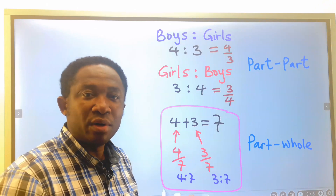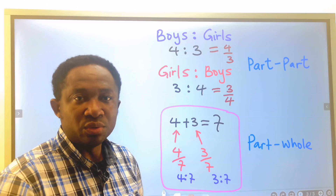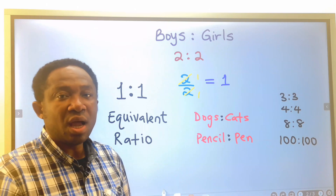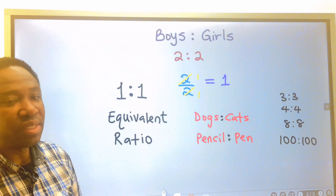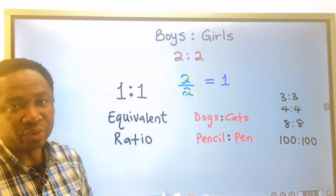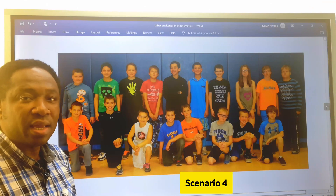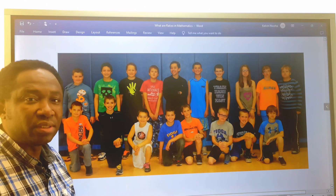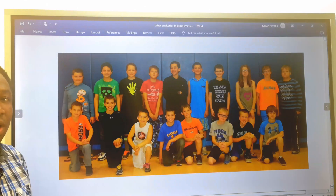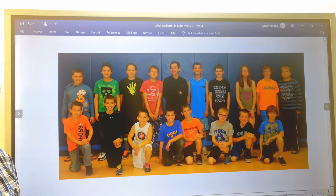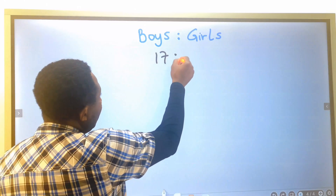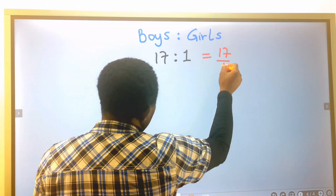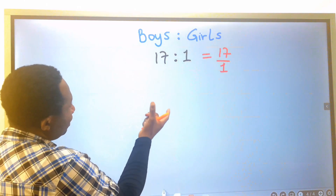Now that you can recall part-to-part and part-to-whole, you also know we can generate one in a ratio, and when that happens we say we have a one to one ratio. In this next example, we are going to consider 18 kids — 17 boys and only one girl. The boys to girl ratio will be 17 to one, which is the same as 17 over one.